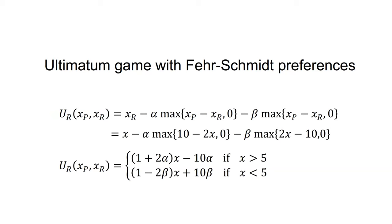We can plot the utility function for this game as the size of the offer increases. As the offer is not independent of the proposer's payoff, I will derive the shape of the utility curve as a function of XR. The utility of the responder is a function of XP and XR, which equals XR minus alpha·max(XP minus XR, 0) minus beta·max(XR minus XP, 0). Substituting in the payoffs, this equals X minus alpha·max(10 minus 2X, 0) minus beta·max(2X minus 10, 0). We can also write this as: (1 plus 2·alpha)·X minus 10·alpha, if X is less than or equal to 5, and (1 minus 2·beta)·X plus 10·beta, if X is greater than 5. The slope of each of these curves is twice that we saw earlier, as any increase in outcome for the responder is matched by a decrease in outcome for the proposer and vice versa.